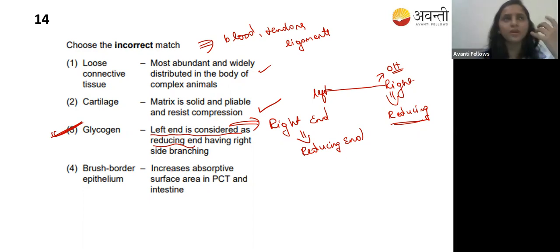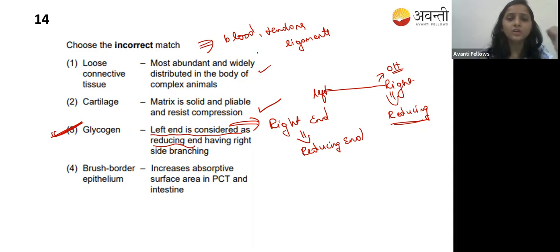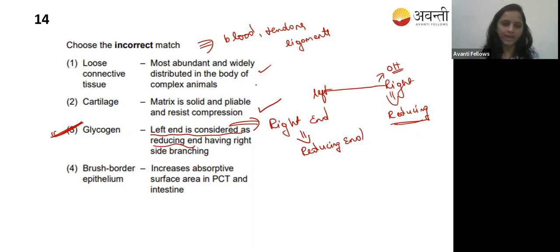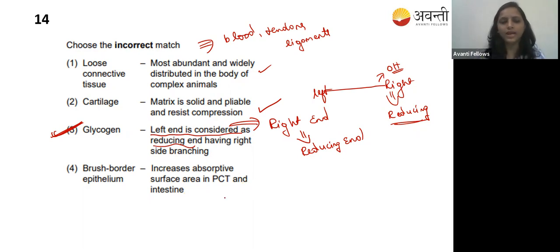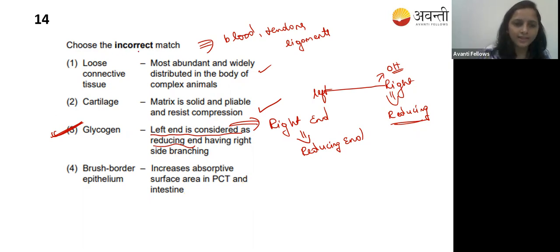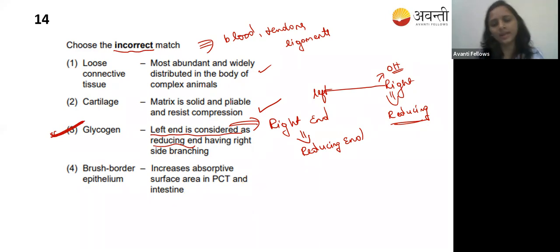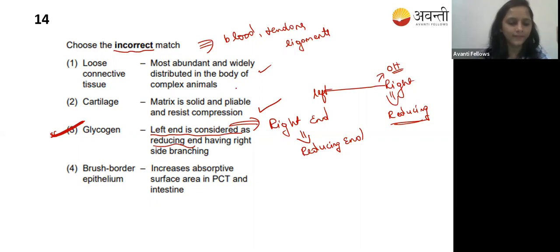Option four - brush border epithelium increases absorptive surface area in the proximal convoluted tubule and intestine - yes, that is correct. Since they are asking for the incorrect match, option three is the answer: the right end has the reducing end, not the left end.